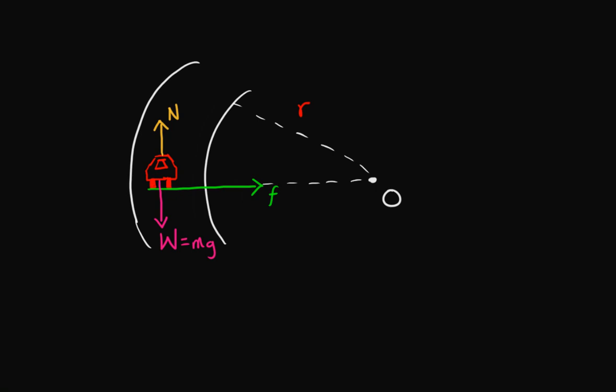In this lesson you are going to learn about circular motion — the motion of a particle about a fixed point. Looking at this figure, I have a car moving in a circular path about a center point O.